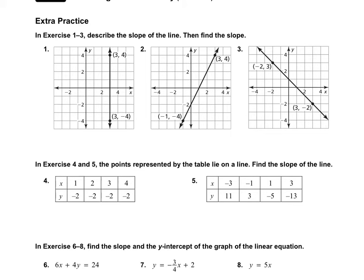On page 83, exercises 1 through 3 ask us to describe the slope of the line and find the slope. Slope always goes by the letter m — remember y equals mx plus b where m is your slope.